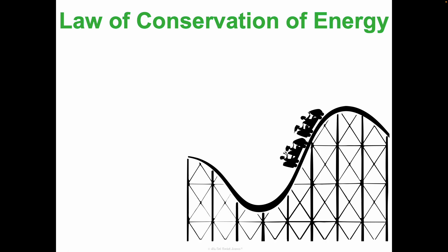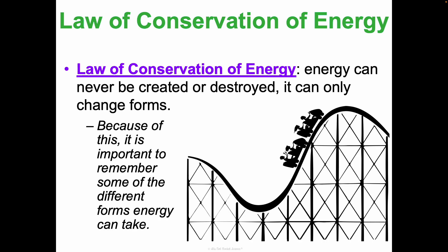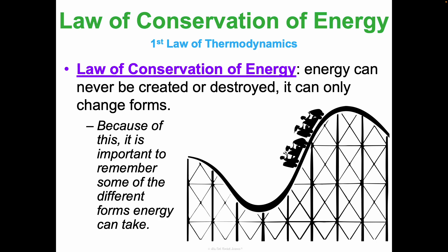We cannot talk about energy unless we talk about the law of conservation of energy. This is also known as the first law of thermodynamics. It states that energy can never be created or destroyed — it can only change forms. We are going to refresh our memories on the different forms of energy we learned about in Concept 1, and then talk about how this changing of forms works and start spotting it in the world around us.